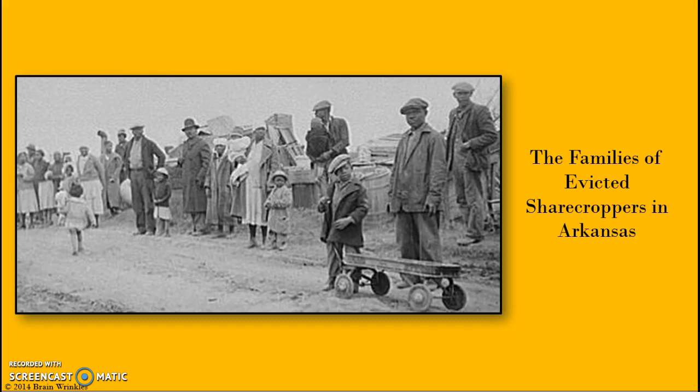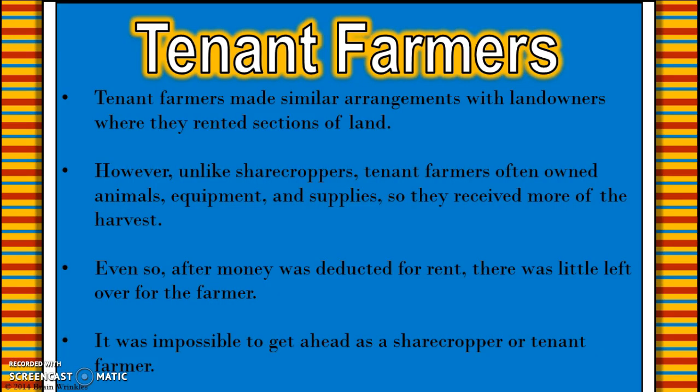There would be evicted sharecroppers because the landowner would run out of money to support them. As crop prices would fluctuate and fall too far, even when crops came in there wasn't enough money for the landowner to pay for the supplies to give the sharecropper, so they would have to evict them. Tenant farmers made similar arrangements with landowners, but unlike sharecroppers they owned some of their own animals, equipment, and supplies, so they could receive more money from the harvest. Even after money was deducted for rent, there was very little left, making it very difficult for sharecroppers or tenant farmers to get ahead. We will learn about Alonzo Herndon in our next unit — a sharecropper who became a millionaire.